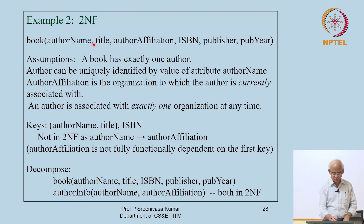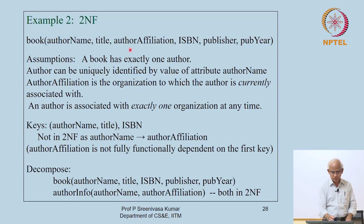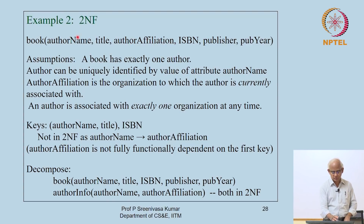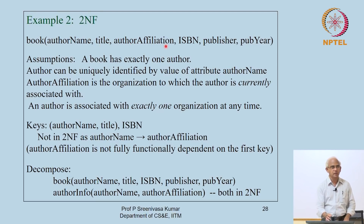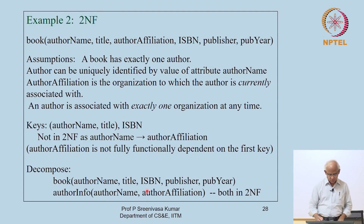Note that the question of violating second normal form does not even arise if there is no key with multiple attributes. Unless a key has multiple attributes, there is no scope for a partial dependency. So the first check when testing for second normal form is whether any key has multiple attributes.